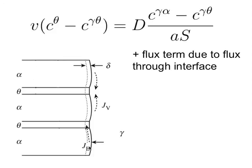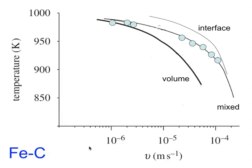At high temperatures, volume diffusion dominates because it is easy, and the boundary thickness is small compared to the available volume ahead of the interface. At low temperatures, the volume diffusion coefficient becomes so small relative to boundary diffusion that much of the flux goes through the boundary itself. Calculations of growth rate as a function of temperature confirm that at low temperatures, the dominant diffusion mechanism shifts to interface diffusion.